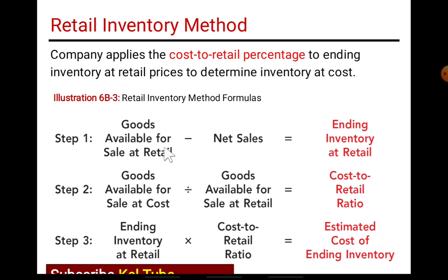Goods available for sale at retail. Goods available at retail minus net sales gives ending inventory at retail. Then, goods available for sale at cost divided by goods available for sale at retail gives the cost-to-retail ratio. Ending inventory at retail times the cost-to-retail ratio equals the estimated cost of ending inventory.